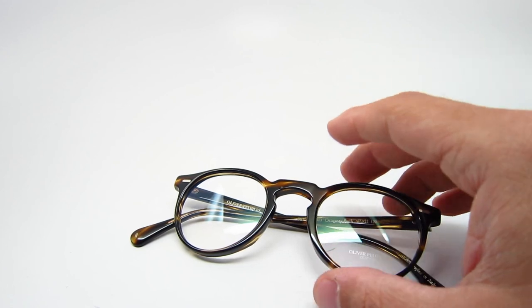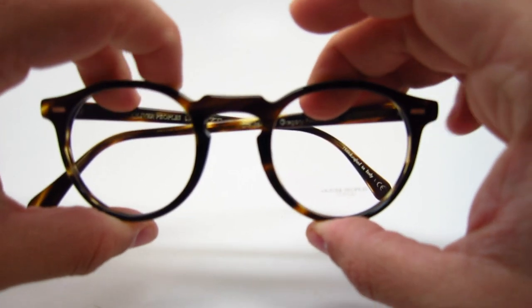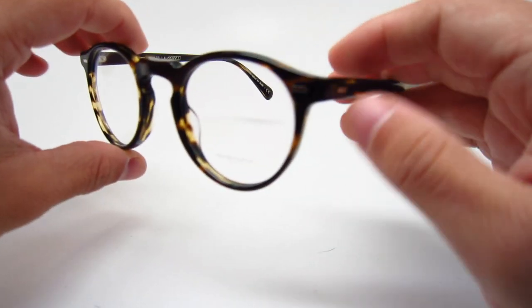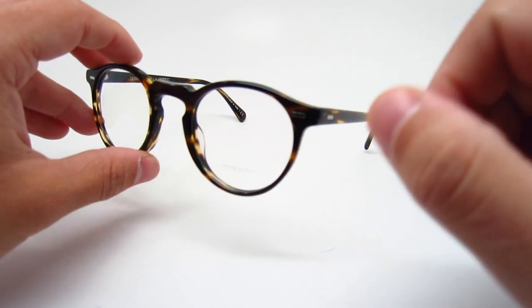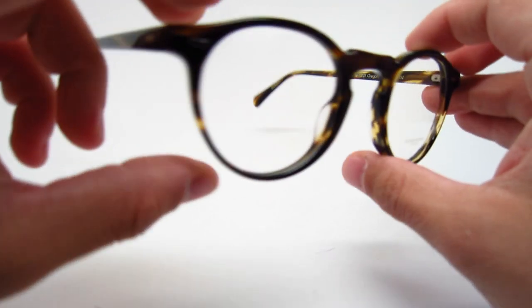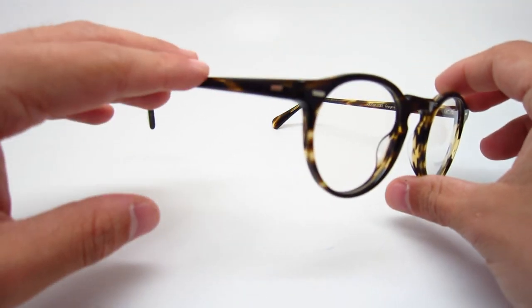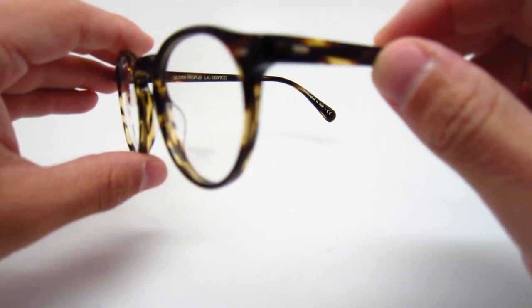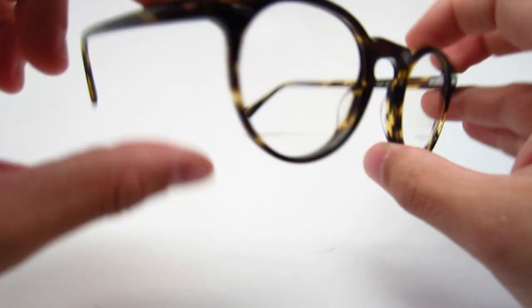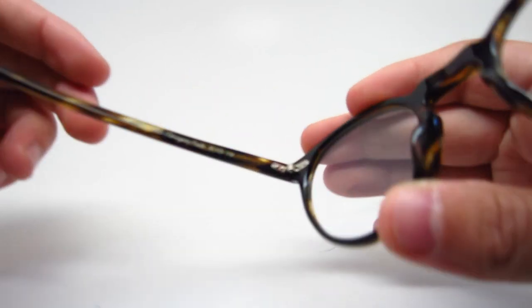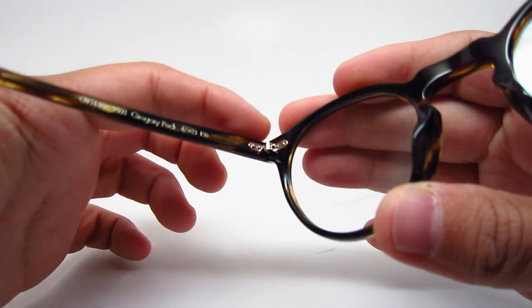So the one I have to show you today, it's the color code 1003. It is the Coco Bolo. It is a plastic frame with just a few metal accents. And, obviously, the hinges are metal.